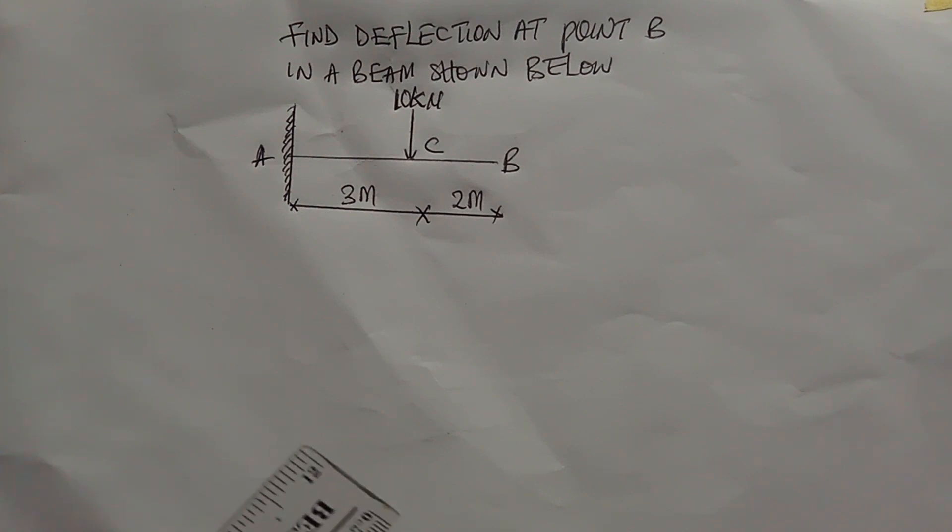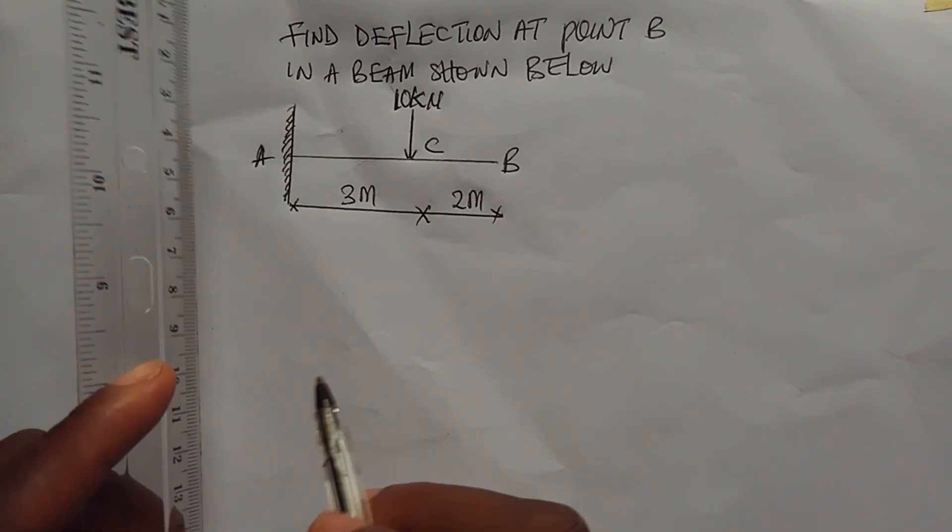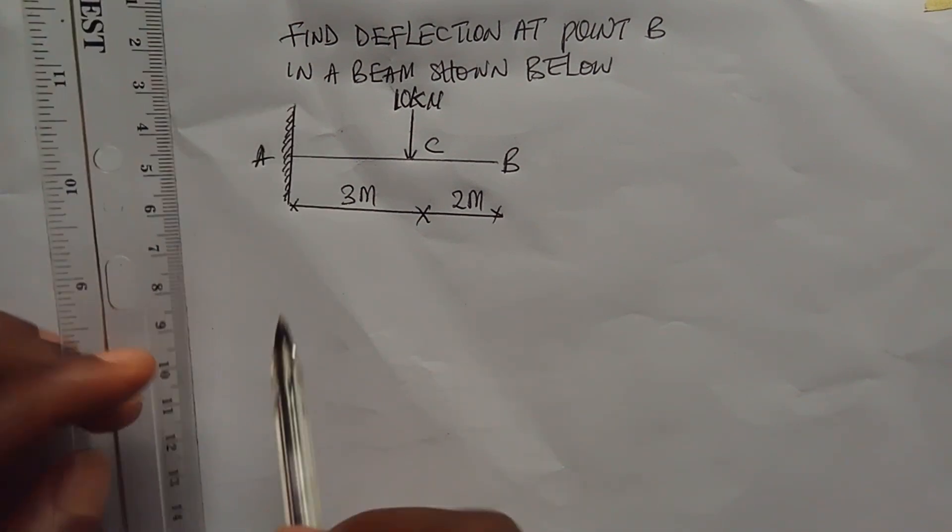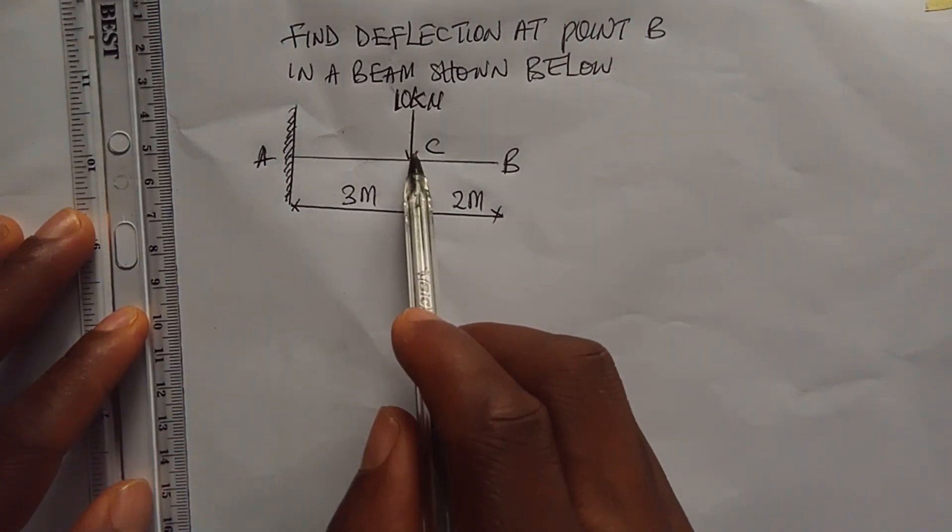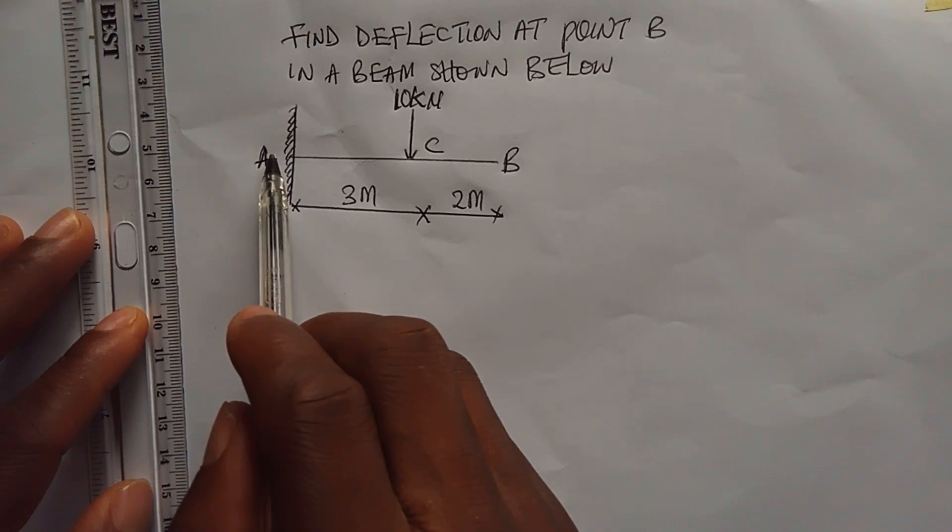First of all, what you have to do is to draw the bending moment diagram of this beam. If you take moment at this point A, it means that this 10 kN will cover a distance of 3m to point A.